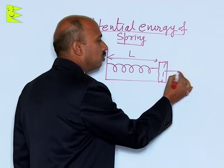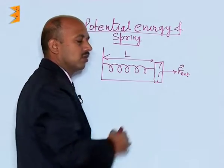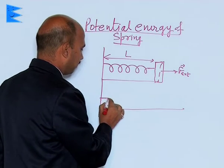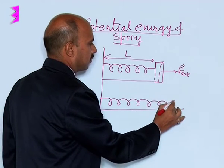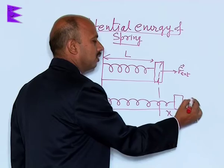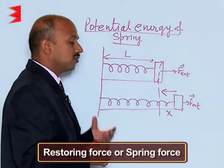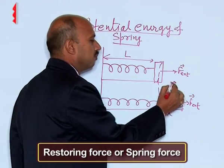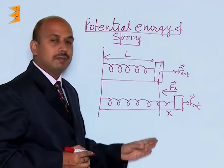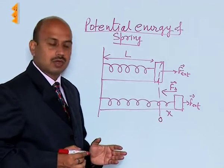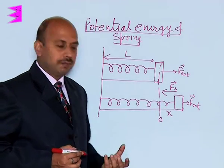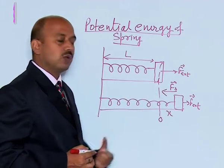If you apply an external force to this side, the spring gets stretched by a distance x. The external force is acting to one side and the restoring force — also called spring force — is acting to the other side. This restoring force tries to bring the spring back into its equilibrium, that is, its original position. So as you stretch the spring, a force acts towards the equilibrium position, and this force is known as the restoring force.